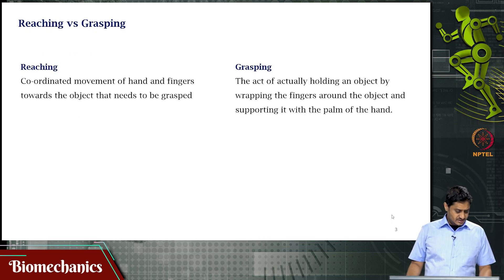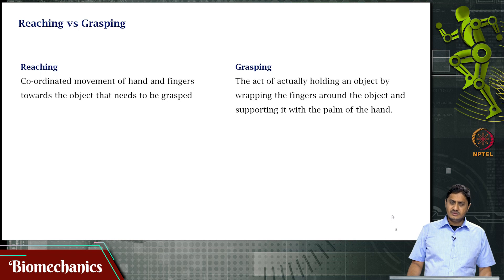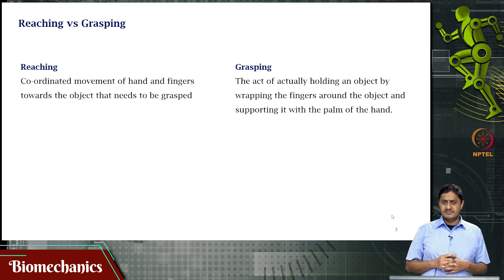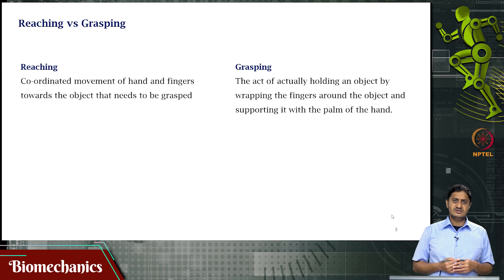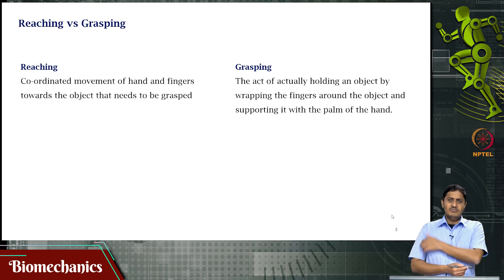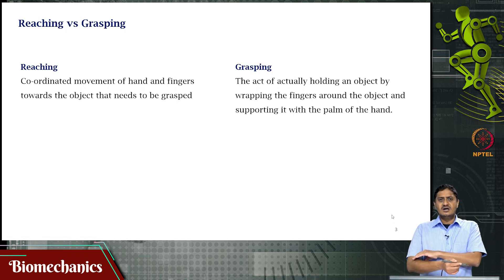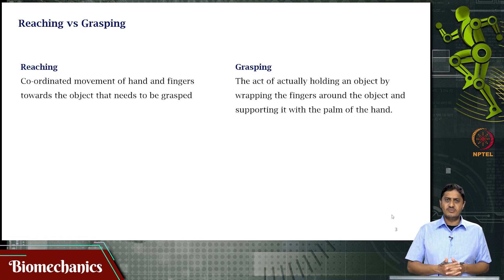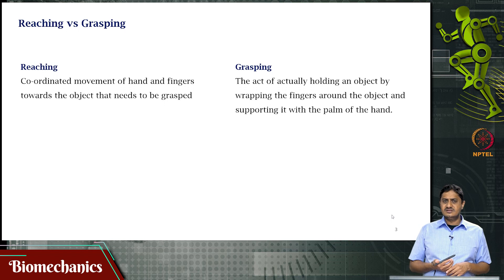We are interested in analyzing reaching and grasping as a mechanical system or machine. Although the human body is not entirely a rigid body, we consider the segments of the limbs as rigid bodies. For reaching, we consider the upper arm — the humerus — and the forearm bones, radius and ulna, as rigid bodies. A rigid body is a body that does not deform under application of an external force — its size or shape does not change when a force is applied.